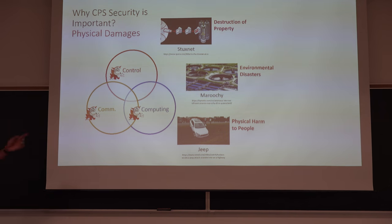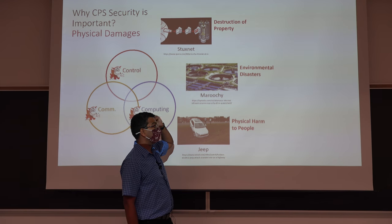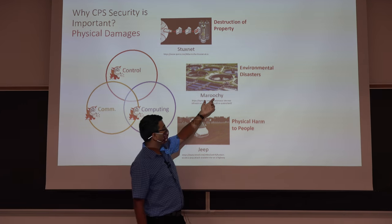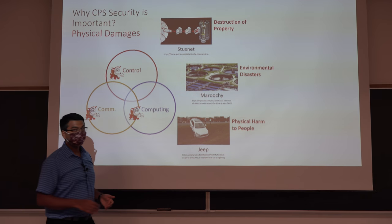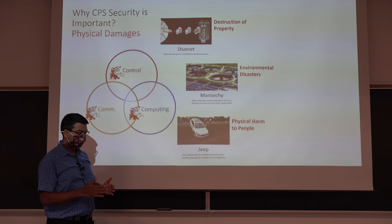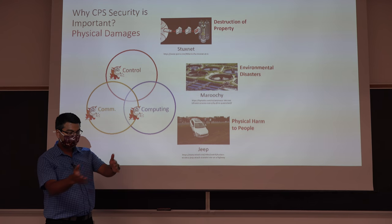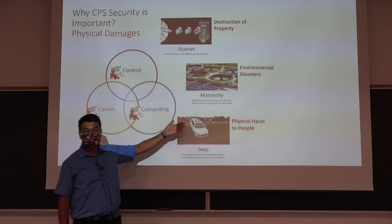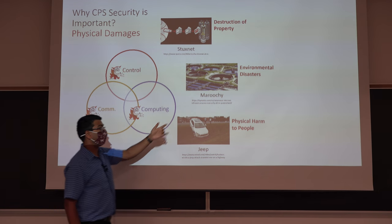You could have destruction of property, as in the Stuxnet worm. You could have environmental disaster — a famous incident around 1997-98 in Australia: an employee fired from a water treatment company remotely attacked the system and channeled sewage water directly to the river instead of the treatment plant, causing an environmental disaster. That's called the Maroochy water plant attack.